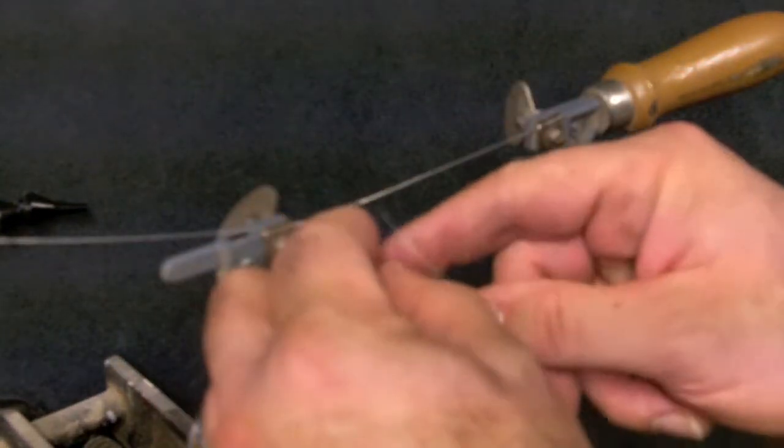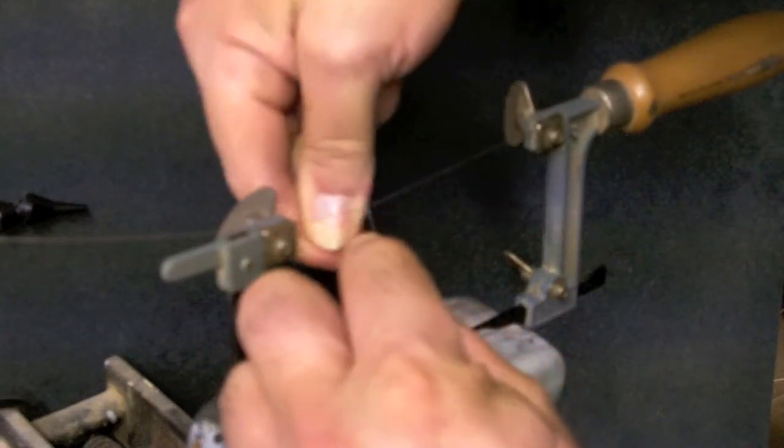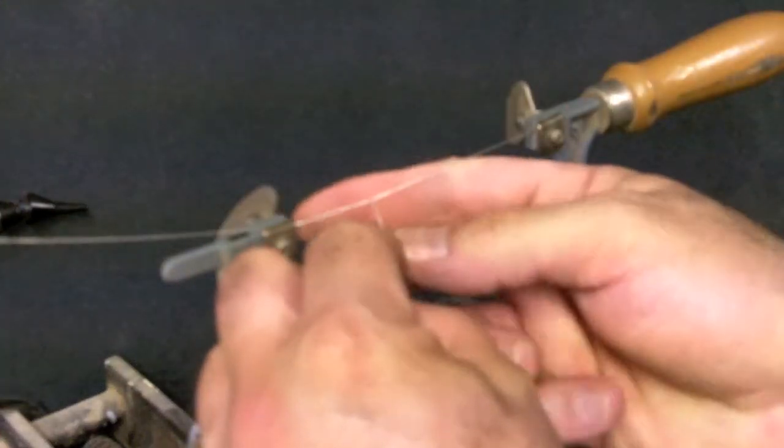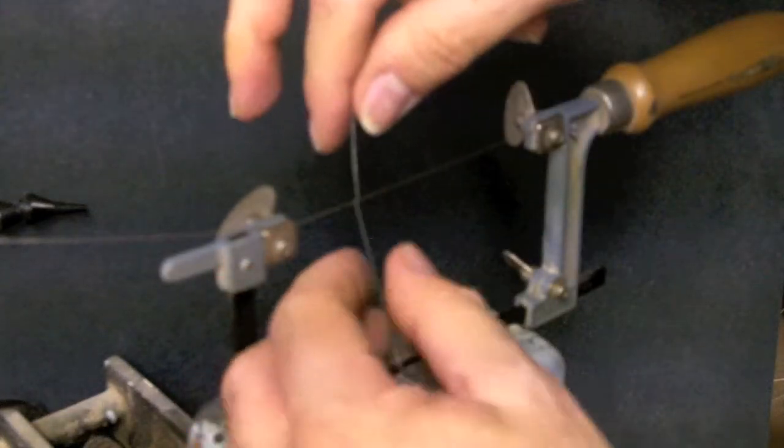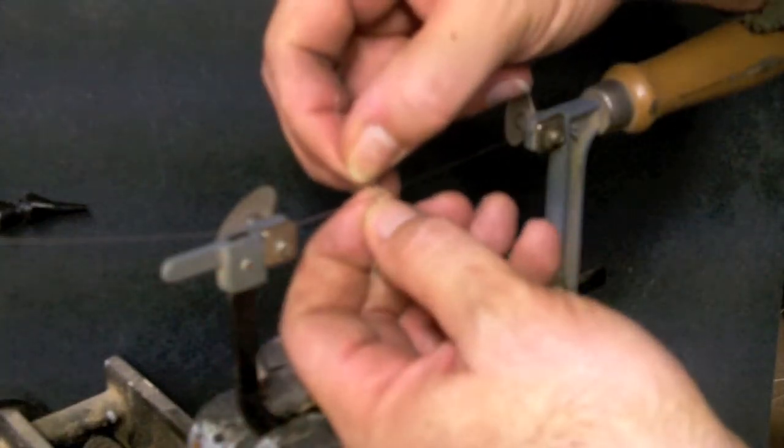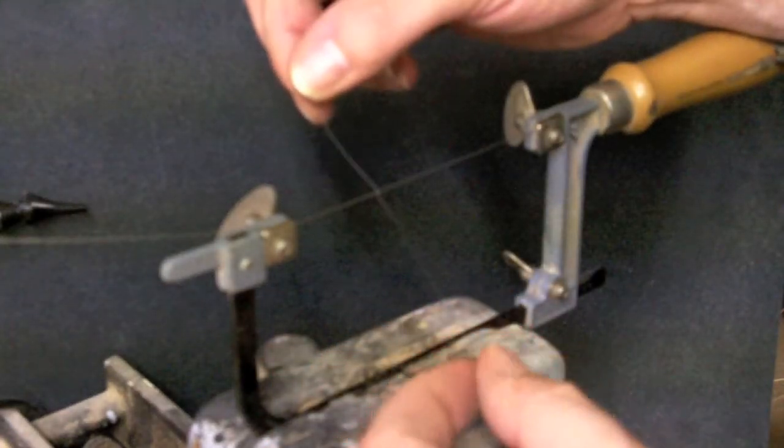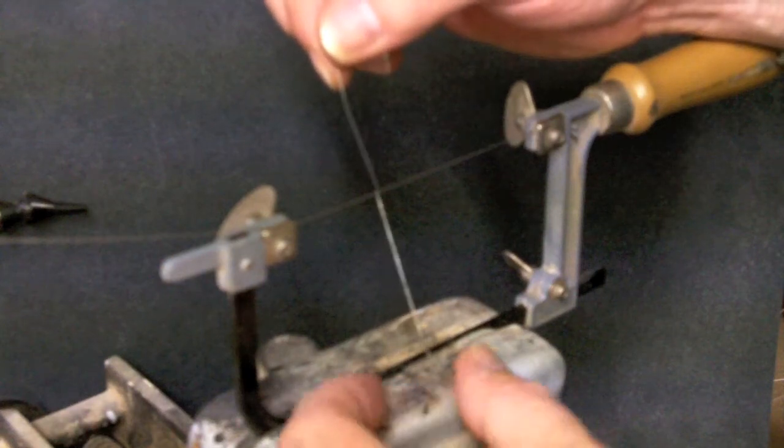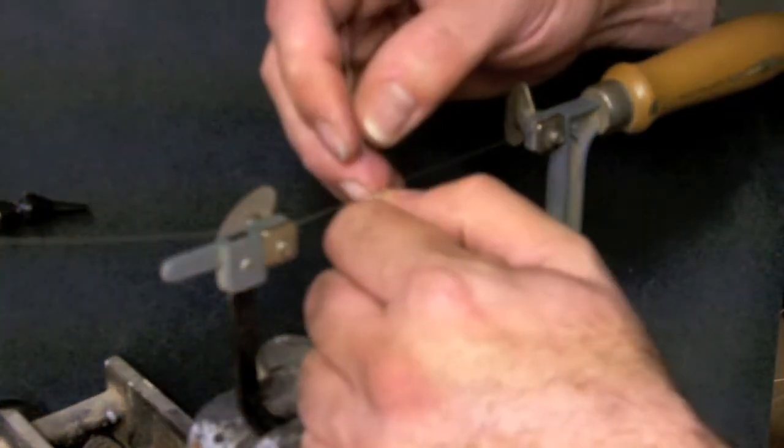Just wrap the wire around the mandrel two times. There you go, so now you have two wraps right around. You could do one or two or three. You'll be shaving the front off to make it flat for the propeller.